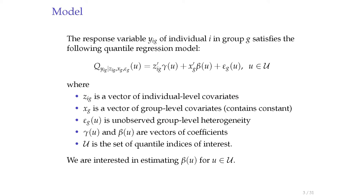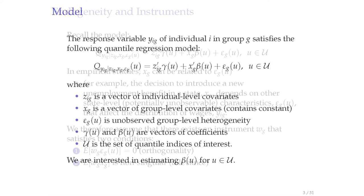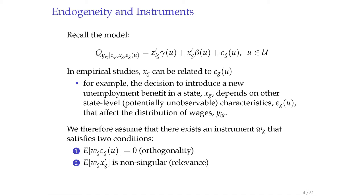This is the model. There is a response variable y_ig of individual i in group g, and it satisfies the quantile regression model. On the right-hand side, z_ij is the vector of individual-level covariates, x_g is the vector of group-level covariates which we are interested in, U is a set of quantile indices of interest, and gamma and beta are vectors of coefficients. An important feature of our model is that we assume there is unabsorbed group-level heterogeneity, captured by epsilon_g. We are interested in a situation where the group-level treatment x_g can be endogenous—related to this unabsorbed factor epsilon_g.